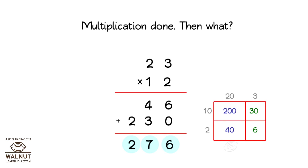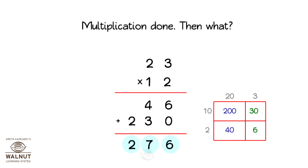By both methods we have done the same thing — only we have presented it differently. But usually we use the column method. It is faster because we don't have to write the numbers down again to add up.